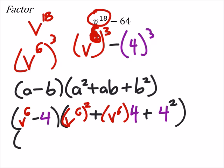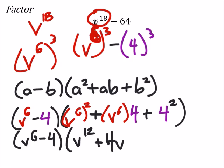All right, so what does this give us? We got v to the power of 6 minus 4. And then inside we got v to the power of 12 plus, I'm going to make that 4v to the power of 6, plus 16.